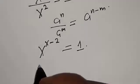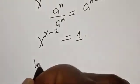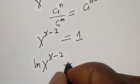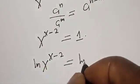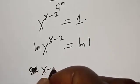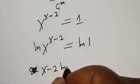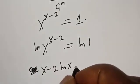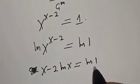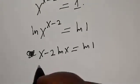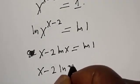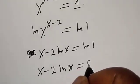Now let's take the log of both sides. We have natural log of s raised to power s minus two is equal to natural log of one. Then we have s minus two times natural log of s is equal to natural log of one. And natural log of one is zero, so we have s minus two times natural log of s is equal to zero.